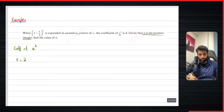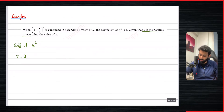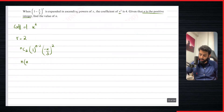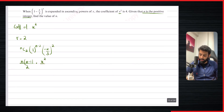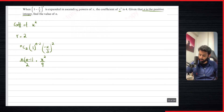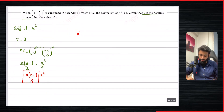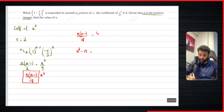From prior knowledge, NC2 with r = 2 gives us the x² term. So we have NC2 × 1^(N−2) × (−x/3)². NC2 equals N(N−1)/2, and 1^(N−2) we can ignore. This gives us N(N−1)/2 × x²/9, which simplifies to N(N−1)/18 × x². The coefficient of x² is N(N−1)/18, and according to the question this equals 4. So N² − N = 72.